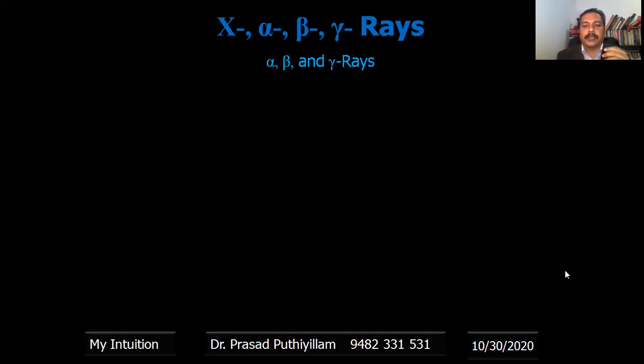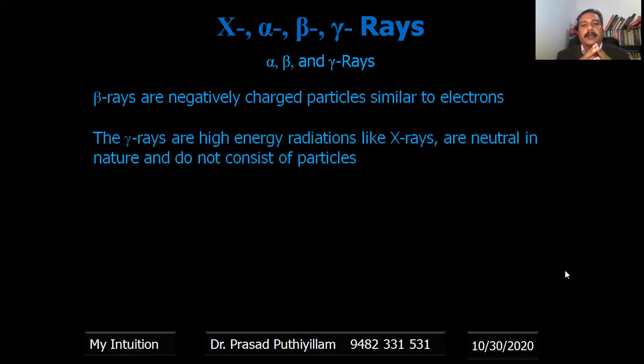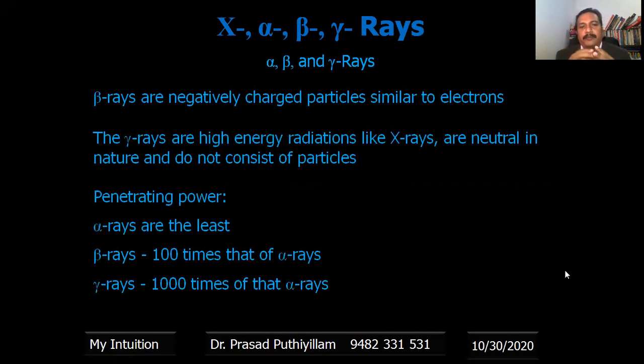The beta rays are negatively charged particles similar to that of electrons, whereas the gamma rays are highly energy radiation like X-rays and they are neutral in nature. They are not having positive charge or negative charge and it does not consist of any particles also.